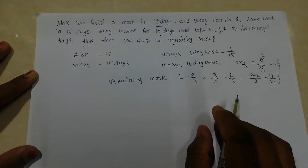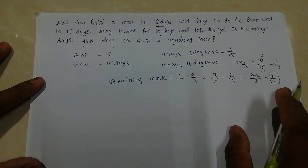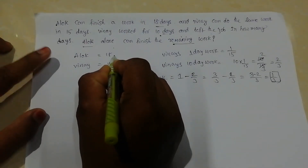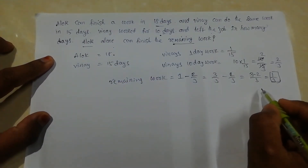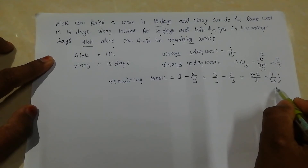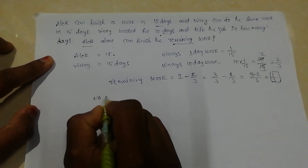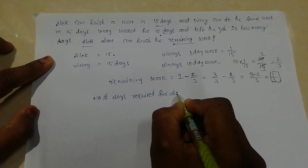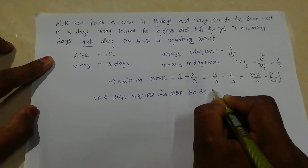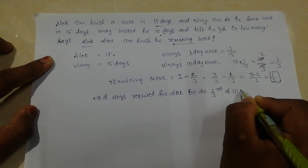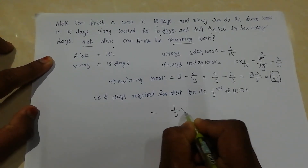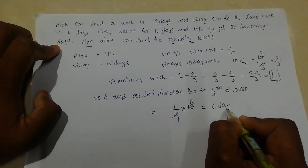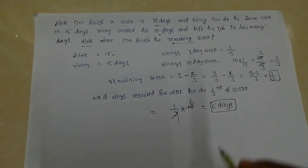To complete 1/3 of the work, how many days does Alok require? Alok can complete the total work in 18 days. So the number of days required for Alok to do 1/3 of the work is 1/3 × 18 = 6 days. That means Alok alone will take 6 days to complete the remaining work.